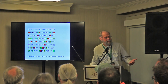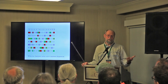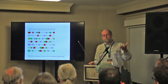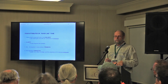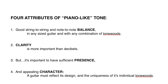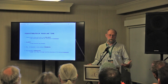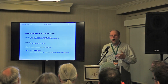So what should the objective of voicing a guitar be? Get as many different resonant frequencies as possible. To my way of building, these are the four things I'm looking for in a guitar: good string-to-string and note-to-note balance, achieved by getting a lot of resonant frequencies; clarity, which is more important than decibels and means strong fundamentals; sufficient presence, which comes when the harmonic structures are filled in for every note; and an appealing character — meaning the guitar sounds like what it's supposed to sound like, whether that's a Brazilian rosewood dreadnought or a mahogany parlor guitar.